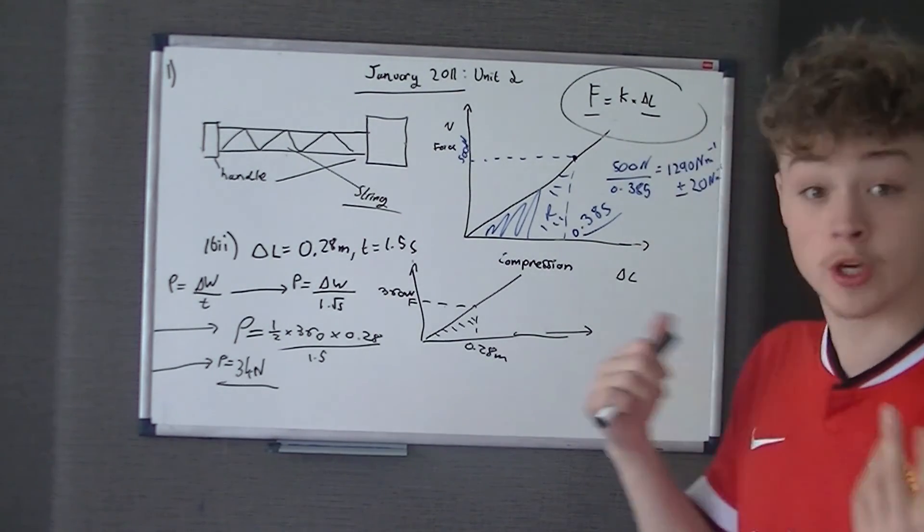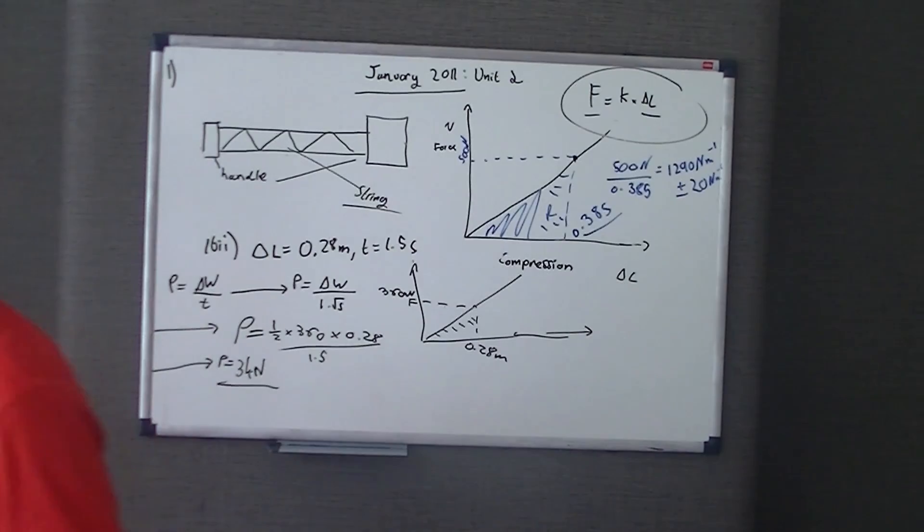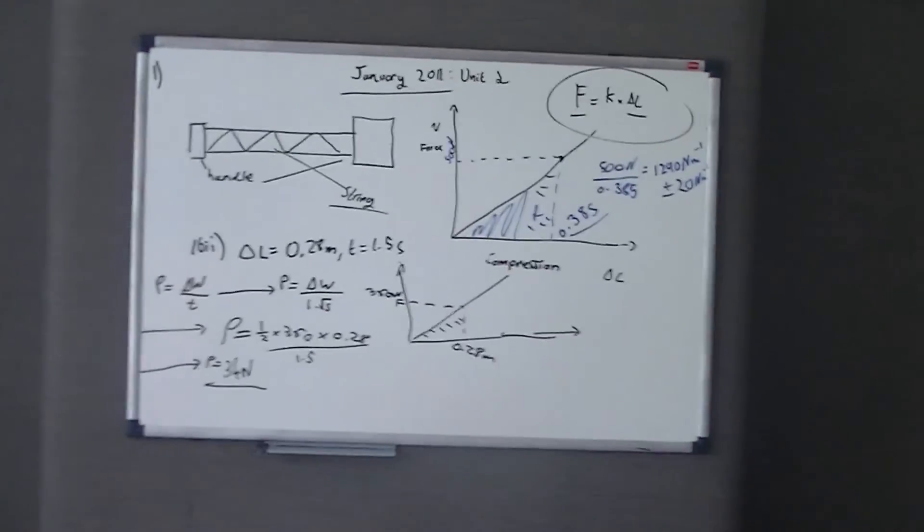So, from 1B part one, you get one mark for saying energy stored is work done, and the work done is the area under the graph. And then, you just put the formula in for that equals half times F times delta L. That's the end of question one. I hope it's been a bit of a guide to you, and we'll see you in the next video.